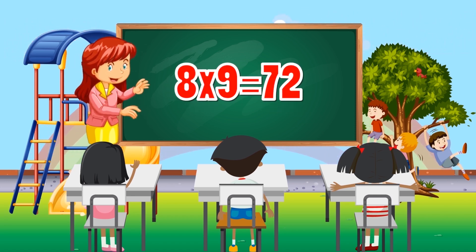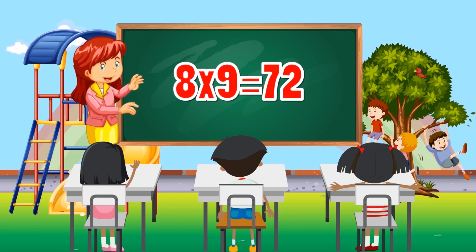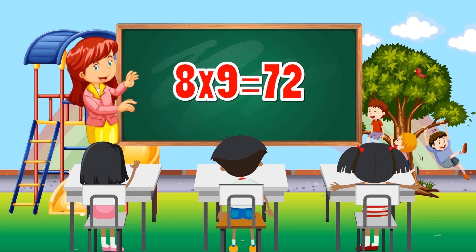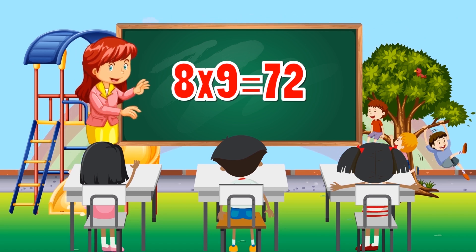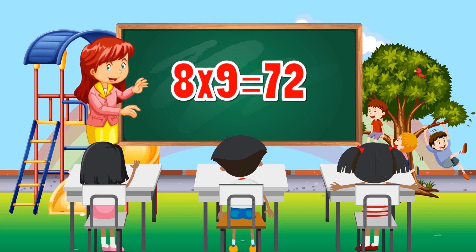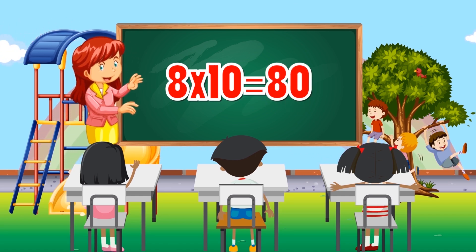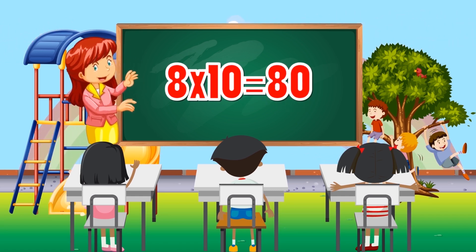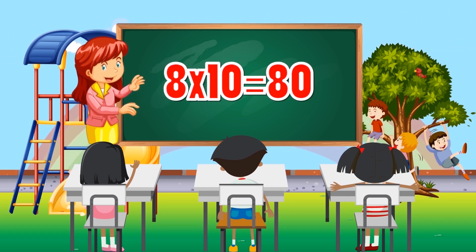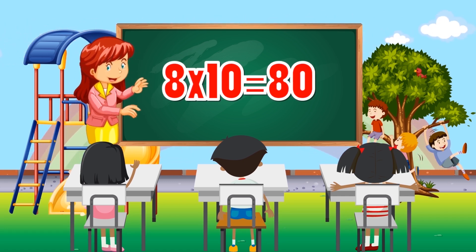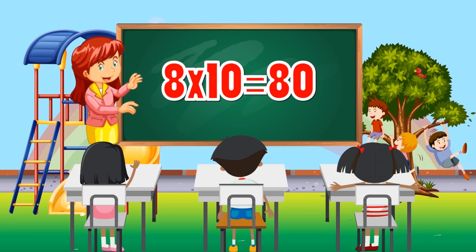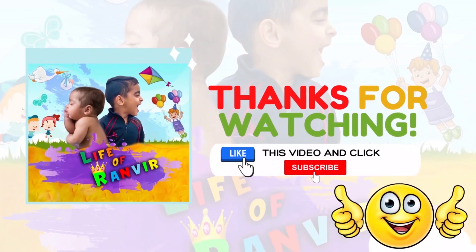8 times 9 equals 72. 8 times 10 equals 80.